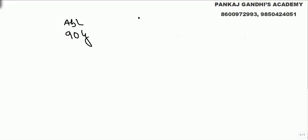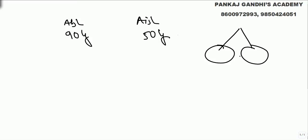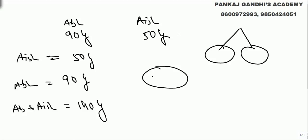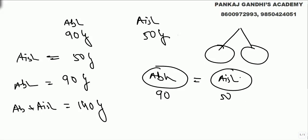Say we have Abhishek who weighs 90 kg and Aishwarya who weighs 50 kg, and we are given a two-sided weighing balance. If we put Aishwarya on one side we get 50 kg, if we put Abhishek on one side we get 90 kg, and together they give 140 kg. But if we put Abhishek on one side and Aishwarya on the other side, when they balance, the remaining rice on Abhishek's side will be 40 kg — because 90 minus 50 is 40.